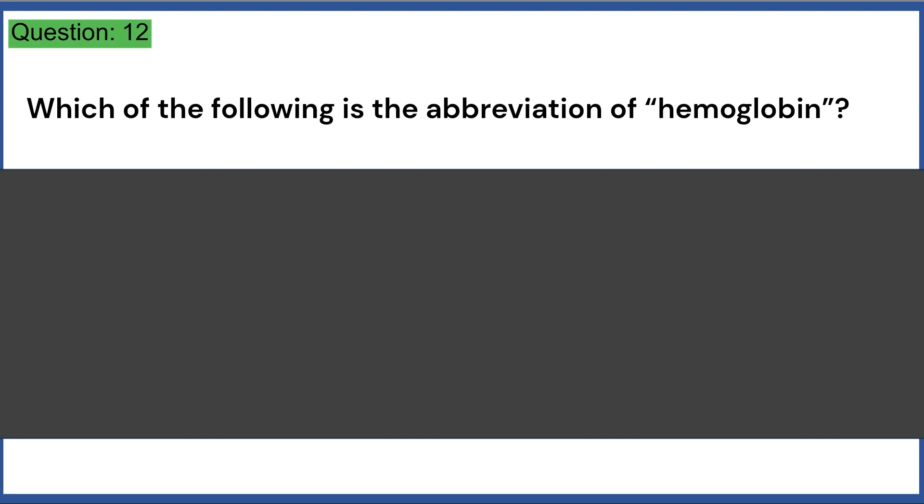Which of the following is the abbreviation of hemoglobin? a. RBC b. WBC c. HGB d. HCT e. None of the above. Answer, C.